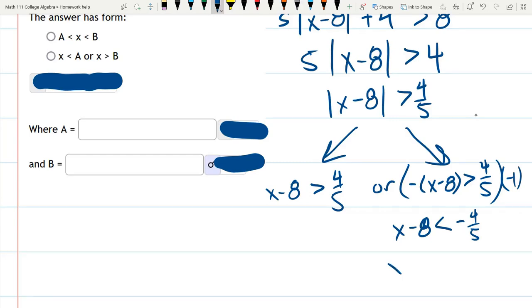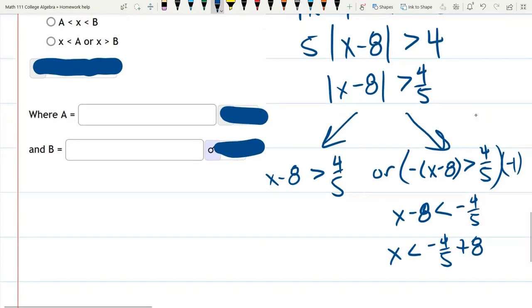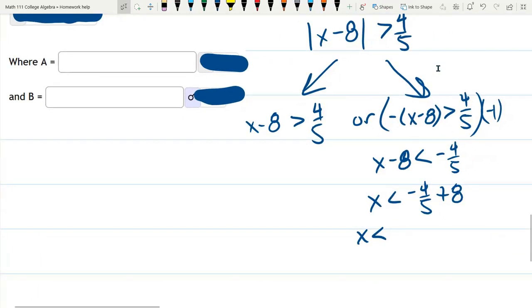And add 8 to both sides. And 8 in fifths, 8 times 5 is 40. So it's negative 4 fifths plus 40 fifths. And that will be 36 fifths.